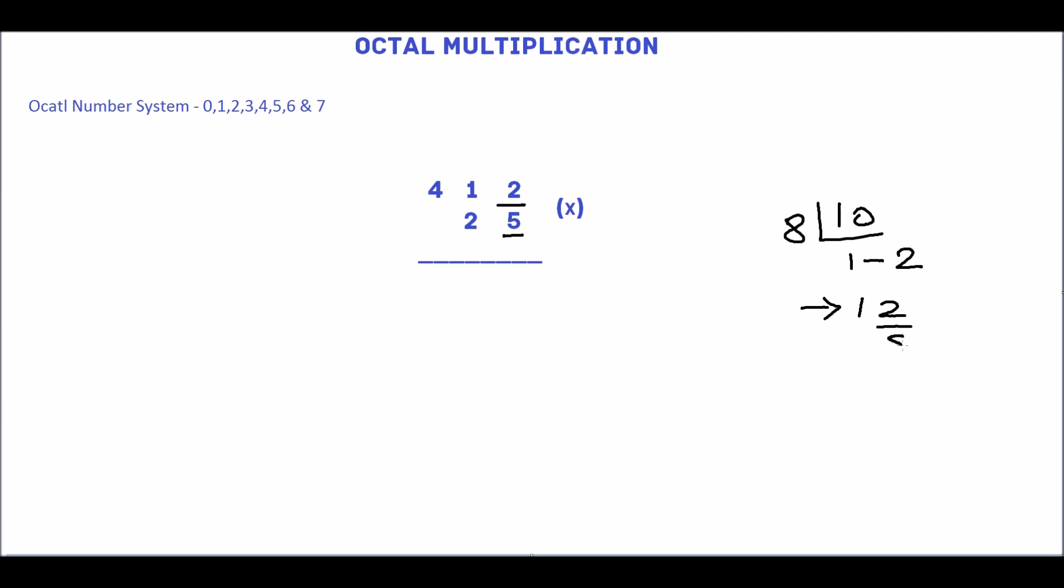So the equivalent octal number is 12. In this, 2 is the sum and 1 is the carry. Write 2 here and carry to the next digit. 5 multiplied by 1 is 5, plus 1 is 6.